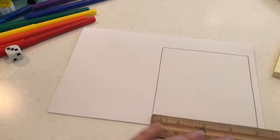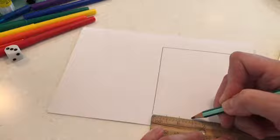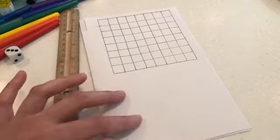Then I'm going to mark half-inch boxes on each side because I want a lot of boxes. Okay, so I have my grid.